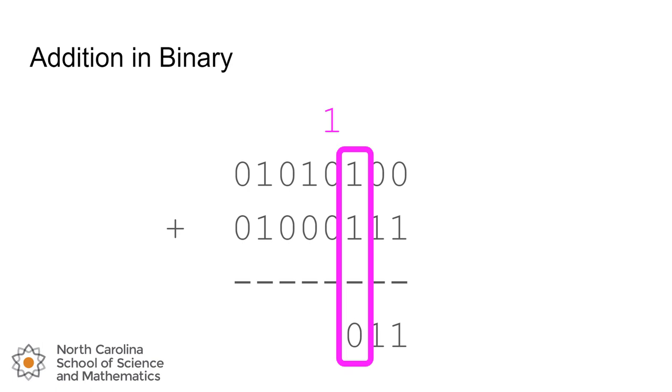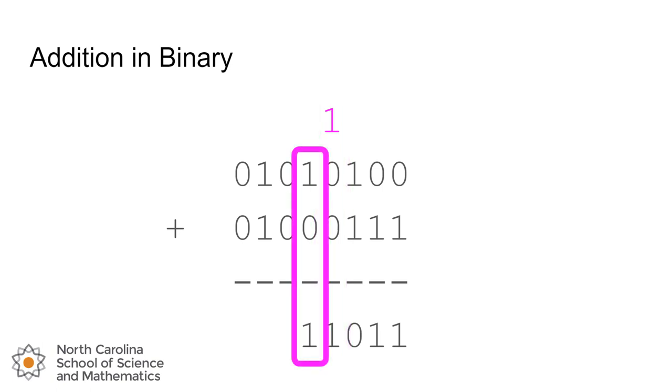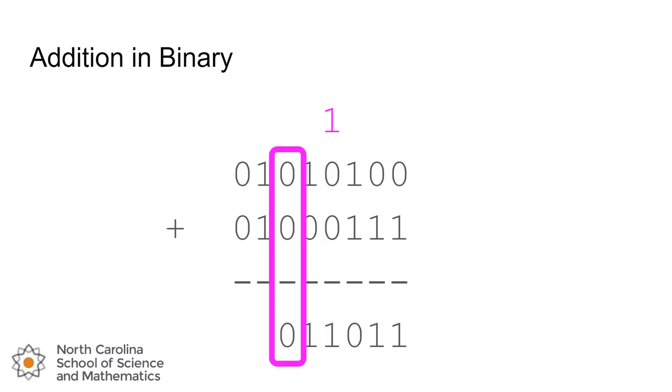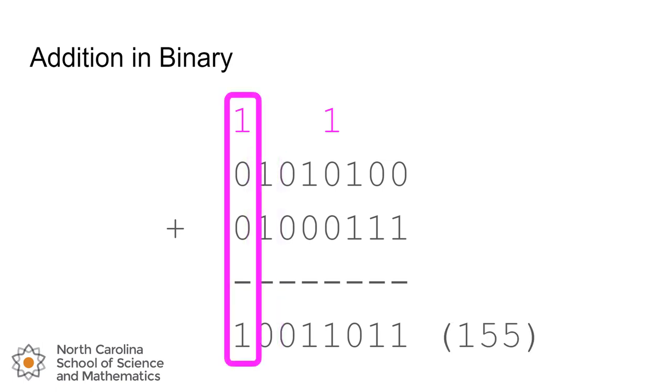In binary, we call that kind of an overflow into the next position. So kind of a computer science specific term for that carrying of the 1. So we'll move to the next column, which is our 8th position. And we've got 1 plus 0 plus 0 is 1. And we move on to the 16's, and so on. So as we move down column by column, we can sum up each position, carrying the 1 when we need to, until we've moved through all 8 bits.